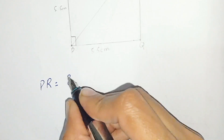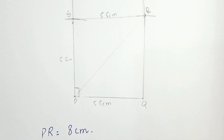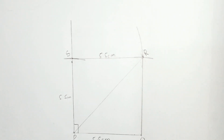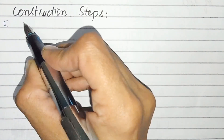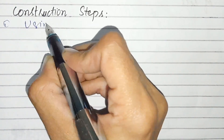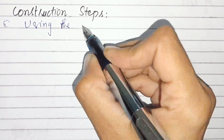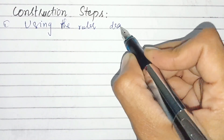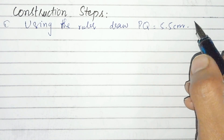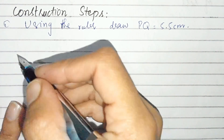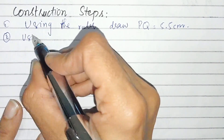PR is equal to 8 centimeters, and this question is solved. In the next step, we have to write the steps of construction in our own words. In the first step, using the ruler, draw PQ which is 5.5 centimeters.